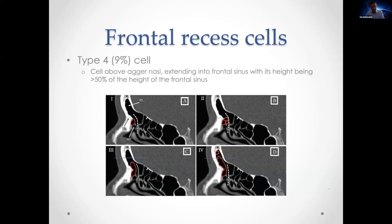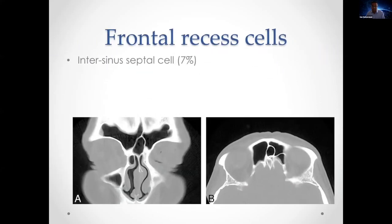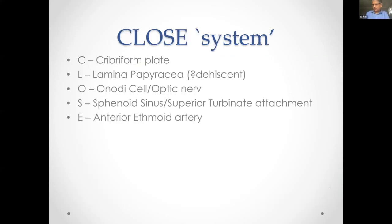These descriptive terms are helpful for describing and training purposes, but ultimately you're going to be removing whatever is in the way. The intersinus septal cell is where the intersinus septum itself becomes pneumatized, usually draining into one side — important to work out on preoperative CT scans. It's important to be aware of the CLOSE mnemonic for systematic CT review before sinus surgery: C for cribriform plate, L for lamina papyracea, O for Onodi cell and optic nerve, S for sphenoid sinus, E for ethmoidal artery.